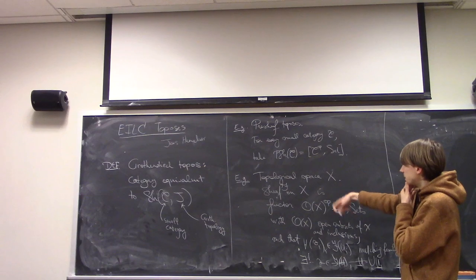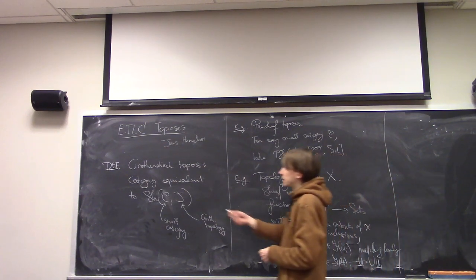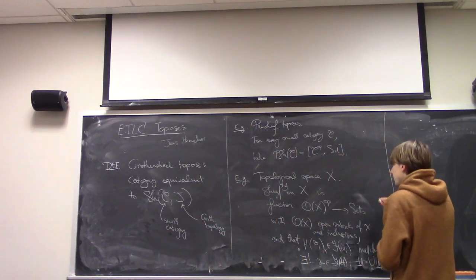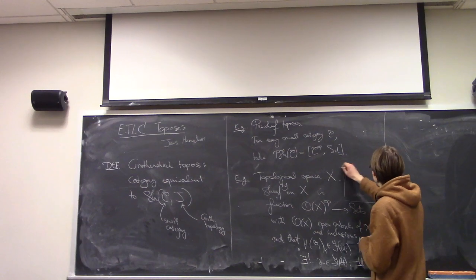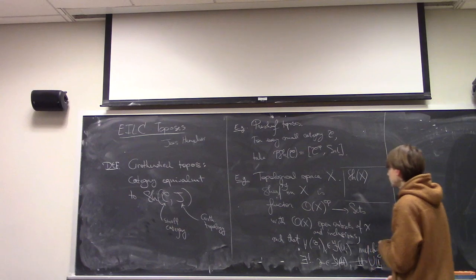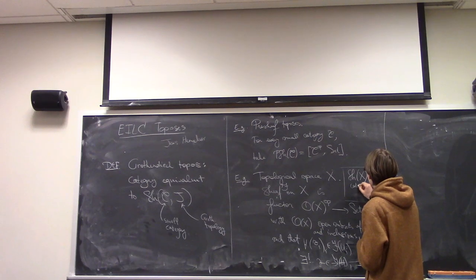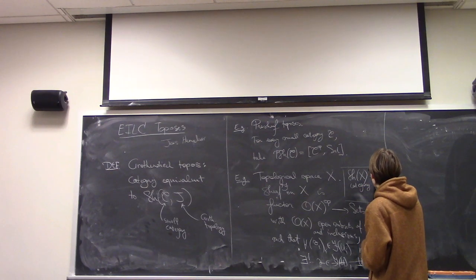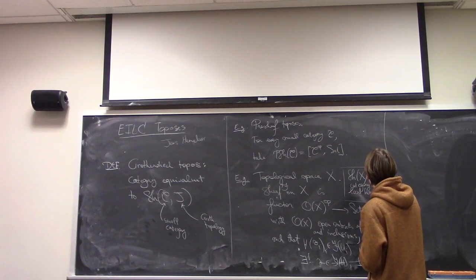These sheaves on X as a category give another example of a Grothendieck topos. It's good to mention that if you look at sheaves on X, this is equivalent to the category of local homeomorphisms to X. So a sheaf is the same thing as a local homeomorphism.